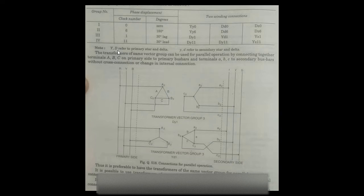The transformers with the same vector group can be used in parallel operation, connecting together terminals A, B, C on the primary bus bar and A, B, C on the secondary bus bar, without cross connection or change in the internal connection. You can see this is the transformer of vector group number 3 — delta on the primary side and star on the secondary side. Primary side is delta-star 1, with delta from primary A, B, C and star on secondary A2, B2.